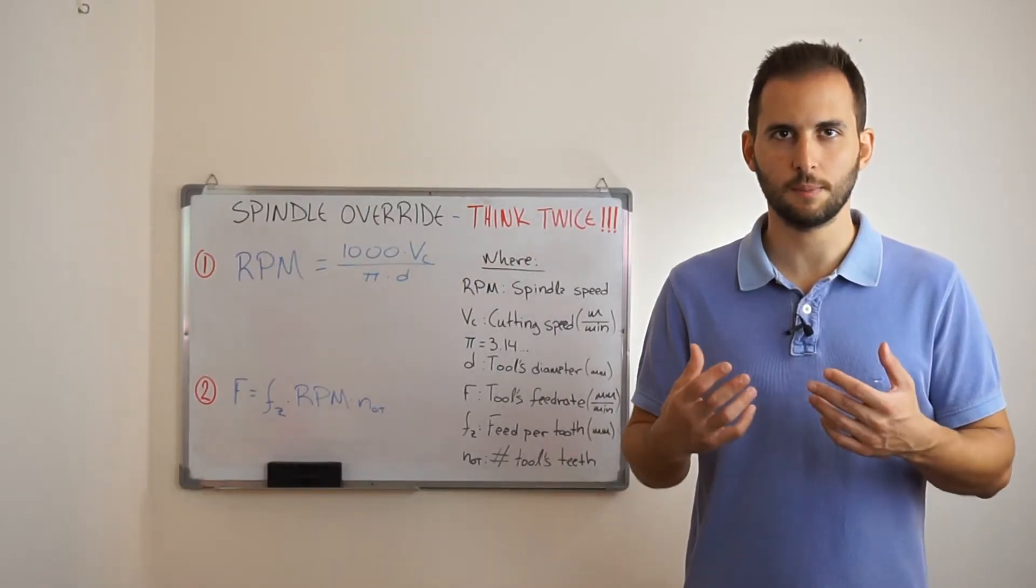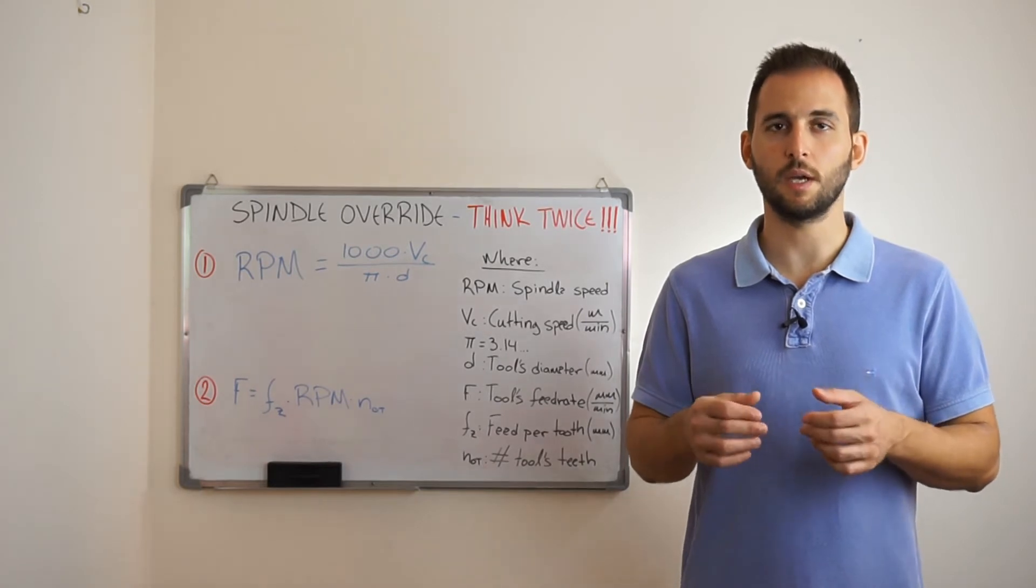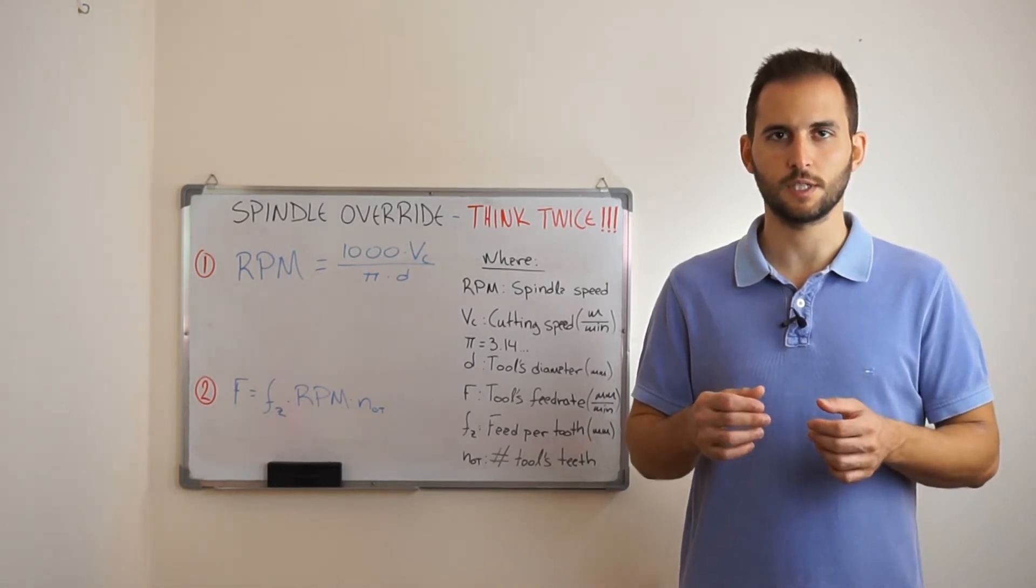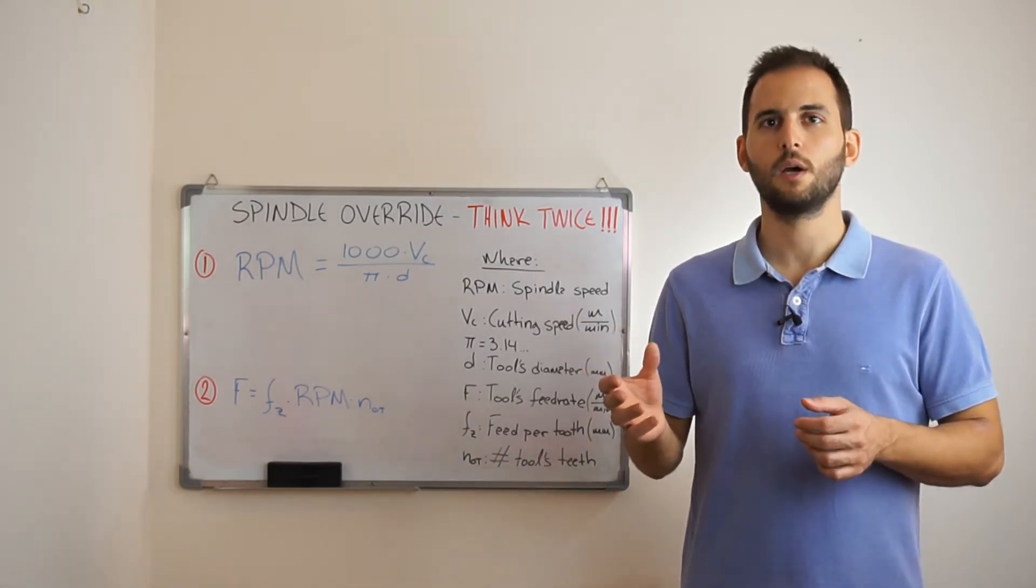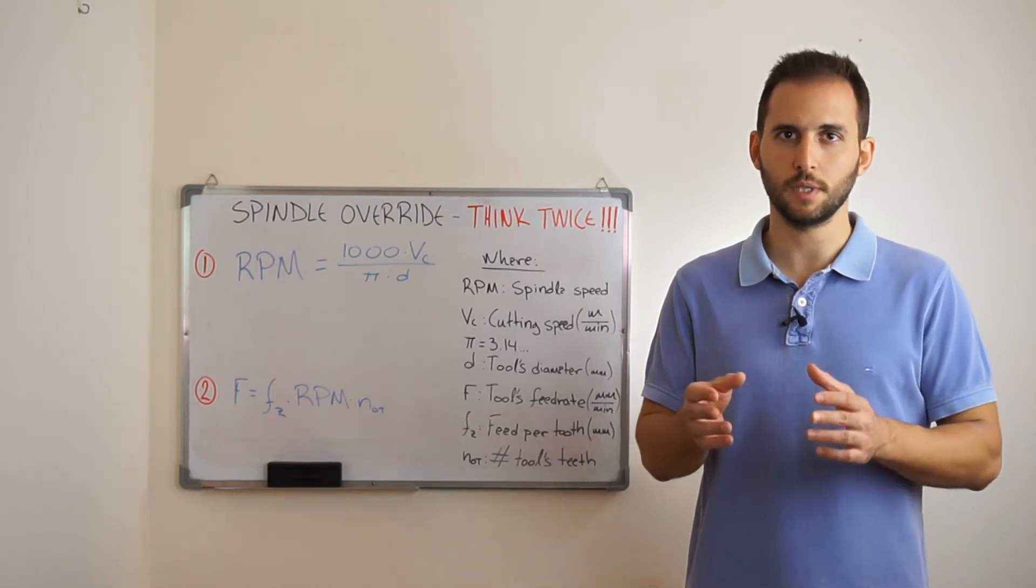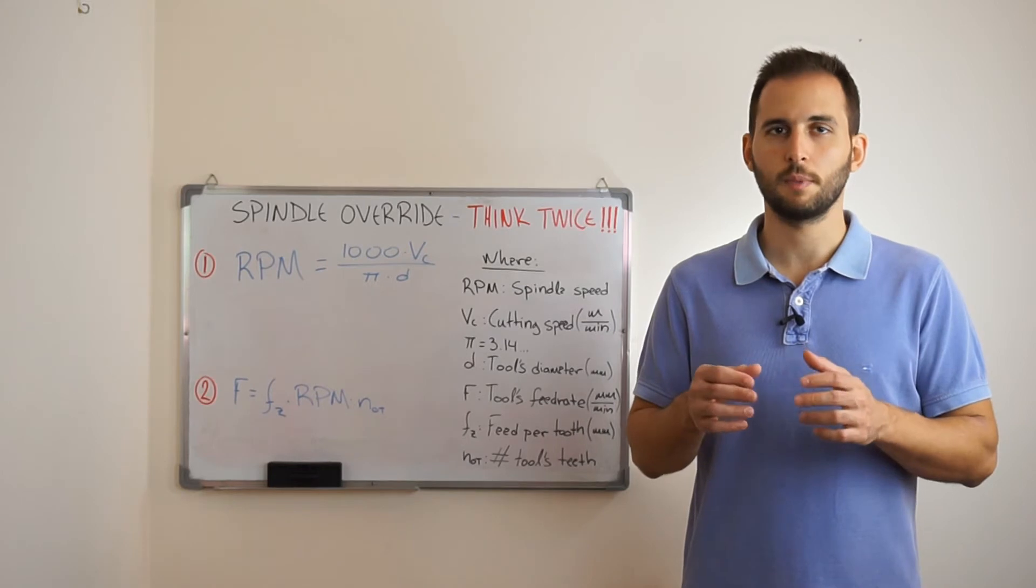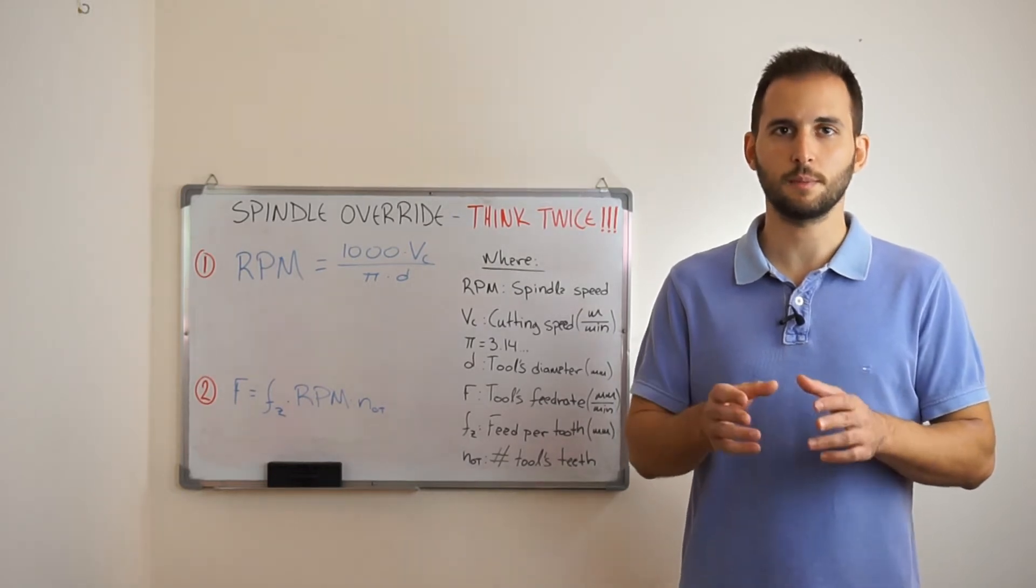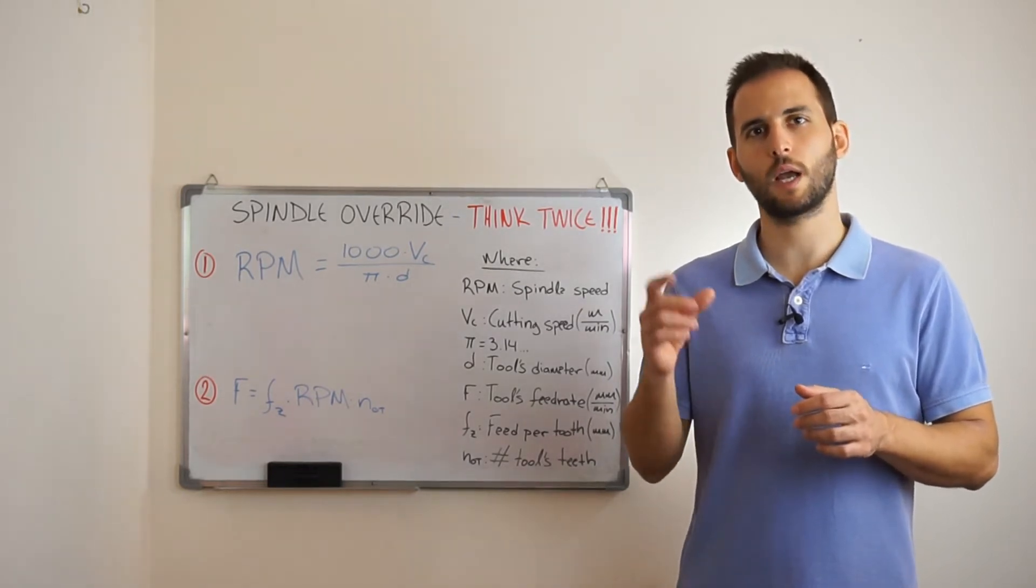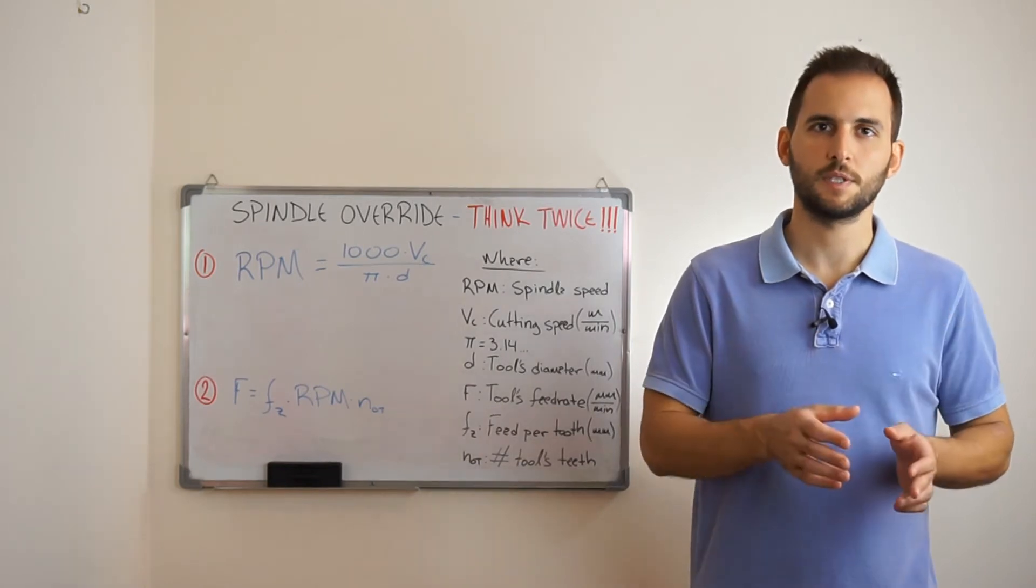First of all, let's see what happens when we override spindle speed and increase its value. As you can see by observing the first formula, when we increase the spindle speed, the cutting speed increases proportionally. This may lead to cutting speeds that are unacceptable for the given combination of cutting tool and machine material.